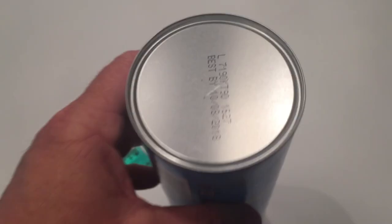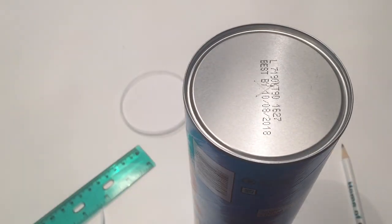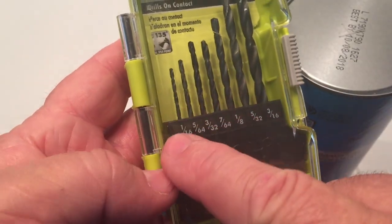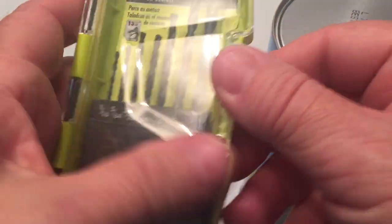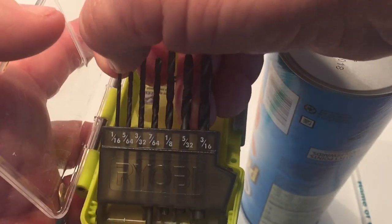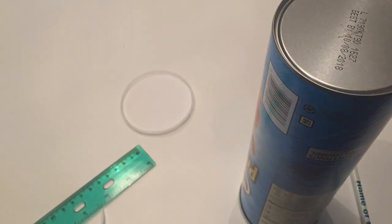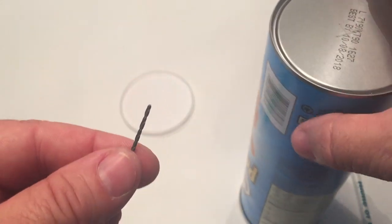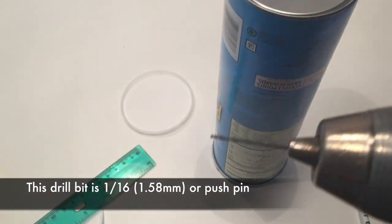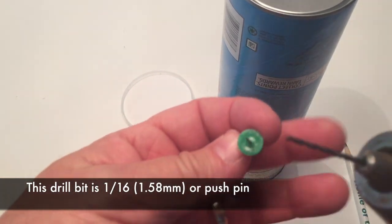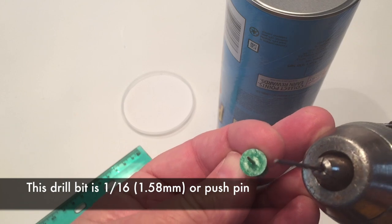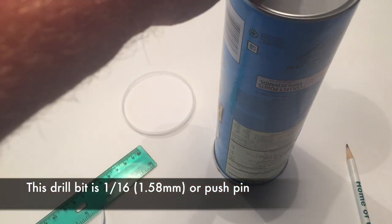Now you can either take a push pin and push it in or a drill bit. I'm going to show you three different sizes on the drill bit. But as the larger you get, the more not as crisp of a view of the sun you're going to get with the drill bits. This is a 1/16th drill bit here. And it's a little bit bigger than a push pin. So you're going to get a little bit bigger viewing of the sun. So I typically like to use the 1/16th.